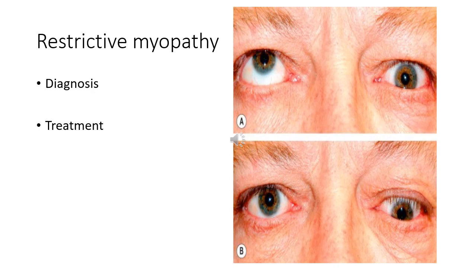Treatment of restrictive myopathy includes surgery or botulinum toxin injection. Surgery is indicated when diplopia is present in the primary and reading positions, provided the disease is quiescent and the angle of deviation has been stable for at least six months. Until these criteria are met, diplopia may be alleviated with prisms. The goal is binocular single vision in the primary and reading positions. Botulinum toxin injection into the involved muscle may be useful in selected cases.